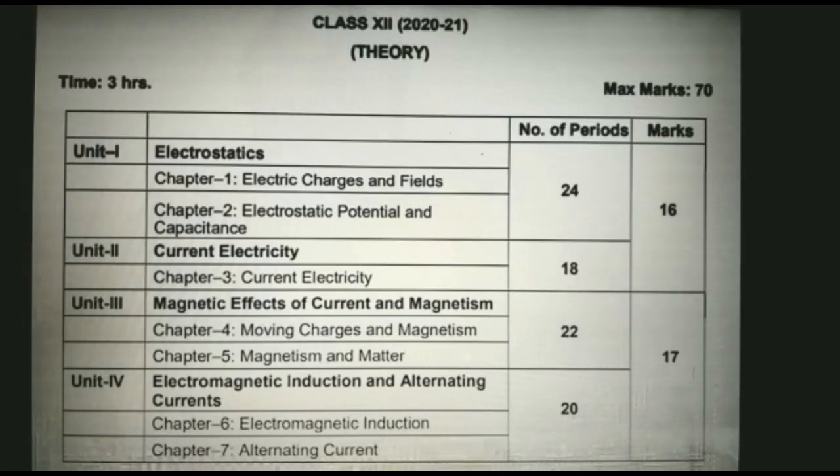Unit 1 consists of two chapters: Chapter 1 electric charges and fields, Chapter 2 electrostatic potential and capacitance. Unit 2 consists of one chapter: Chapter 3 current electricity. The total marks weightage for unit 1 and 2 is 16.